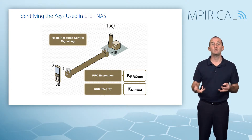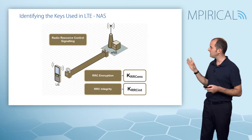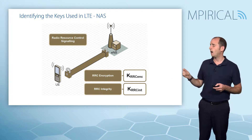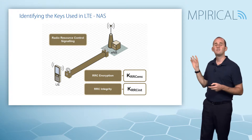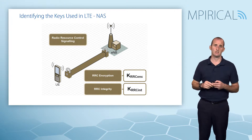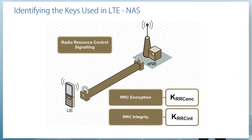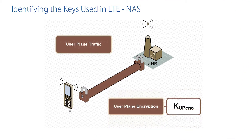It's the same story for RRC. With RRC we encrypt our traffic and we integrity check that traffic, so again we need two additional keys: a key for RRC encryption and a key for RRC integrity checking.